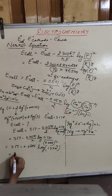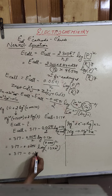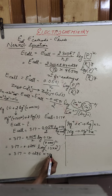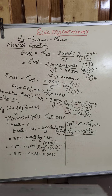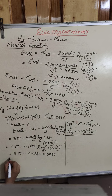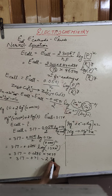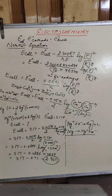Using the log table value of 7.1139 — if you are not sure how to read a log table, please message for clarification. The calculation gives 3.17 minus 0.21, which comes out to be 2.96 volts. This is the EMF of the cell under the given concentration conditions for that particular cell reaction, calculated using the Nernst equation.